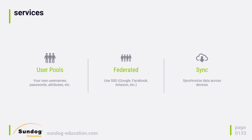The next service is Federated Identity. This is not quite as detailed as User Pools. This service can allow you to authenticate users from a variety of identity providers, such as Facebook, Google, Amazon, Twitter, and others. Using Federated Identity, you don't have a lot of information about your users, but your application is available to a very large number of people without the overhead of sign-up.